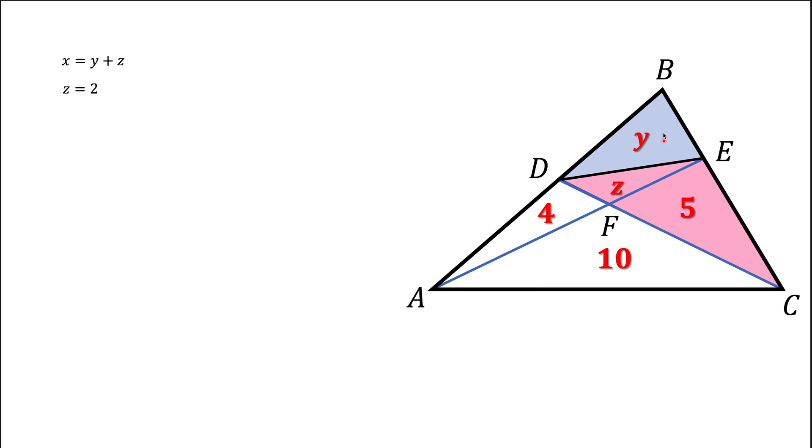The blue triangle has area Y. The pink triangle has area Z plus 5. That's what we have here.